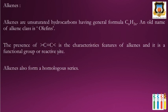First, the definition of alkenes. Alkenes are unsaturated hydrocarbons. The old name of alkenes is olefins — that is, carbon-carbon double bonded compounds. Alkenes are unsaturated hydrocarbons, meaning there is a carbon-carbon double bond present, and they consist of hydrogen and carbon with the general formula CₙH₂ₙ. The presence of the carbon-carbon double bond is the characteristic feature of alkenes and is the functional group or reactive site. Alkenes also form a homologous series — the compounds differ by a CH₂ unit.